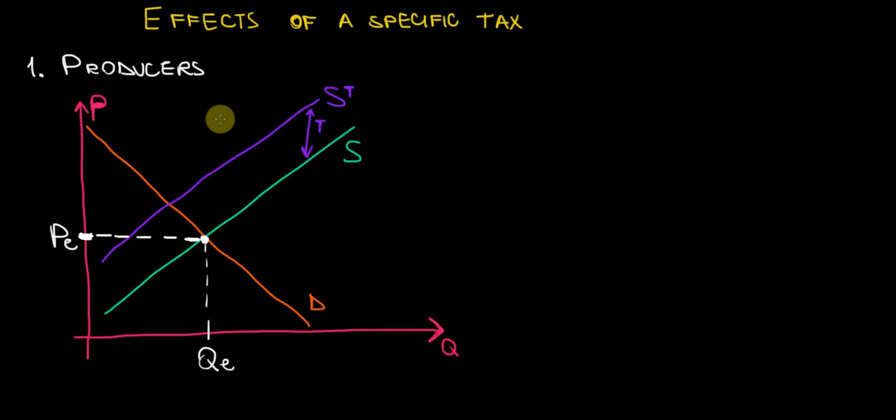In this video I will talk about the producers — how the prices change on the market because of a specific tax, and how much revenue producers actually get to make. In the next video I will talk about the consumers, and in a third video afterwards I will talk about the government and the tax revenue it collects. Dividing this into a series of videos should make it easier to follow. Suppose the following: we have the price-quantity axis, the green supply curve which is the original supply curve.